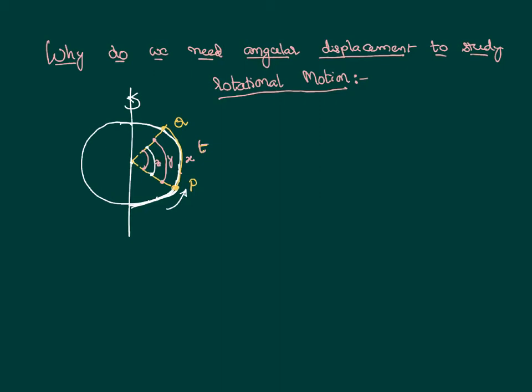So whose displacement do we take to represent the entire body? Do we consider x, y, or z — where x, y, and z are the displacements of the individual particles of the body? None of them actually represents the actual displacement of the body.